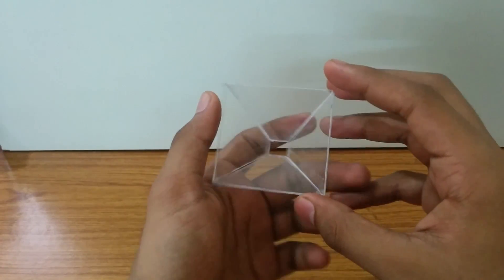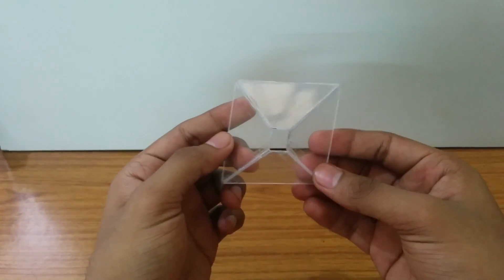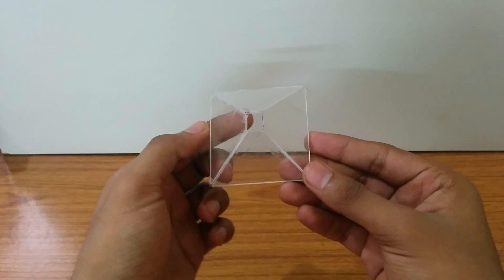Now arrange your 4 cut outs in this manner. It should look like this. Now you can use a transparent tape or glue for connecting these cut outs.